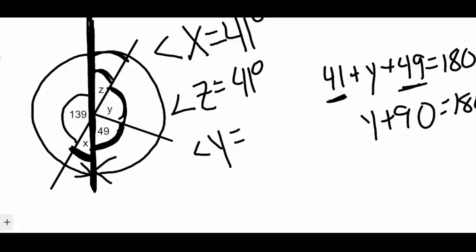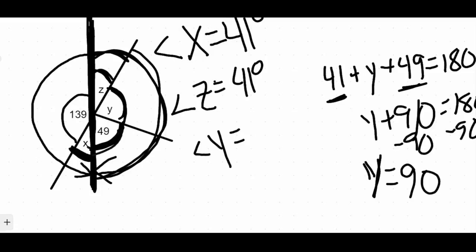So all I have to do is take that 180 minus those 90 degrees. So I'm going to subtract the 90 degrees, and what I get is that angle Y is 90 degrees. So we're taking the 180 and subtracting the 49 that we know and subtracting the Z that we know, and it's going to leave us with that missing piece of Y. So we now know that angle Y is a total of 90 degrees.